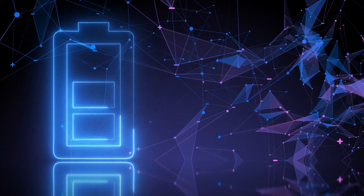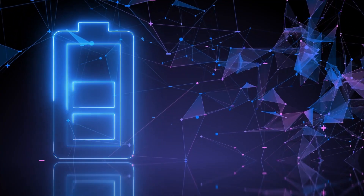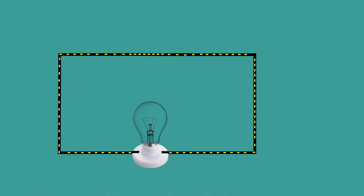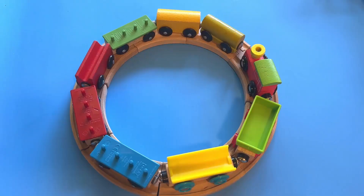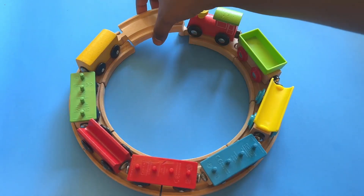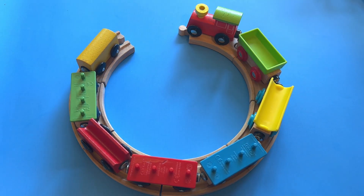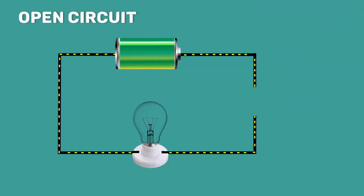Batteries and generators are some of the voltage sources. In the absence of this force, there is no flow of electrons and so the current is zero. In this case, the circuit is closed. Let's just open this circuit. Now, there is no path for the electron to flow. That's the reason in an open circuit, the current is zero.